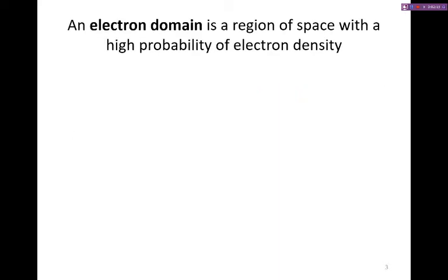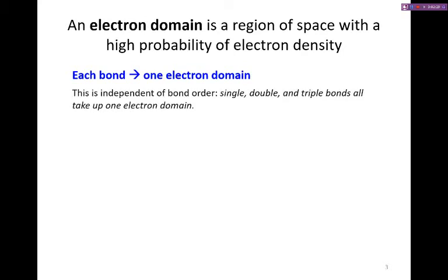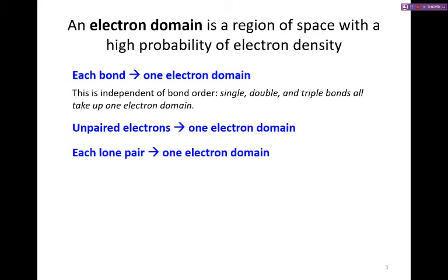An electron domain is a region of space where there's a high probability of electron density. Each bond represents one electron domain, and importantly this is independent of bond order — it doesn't matter if we have a single, double, or triple bond, they all count as a single domain. Lone pairs of electrons, also called non-bonding electrons, also represent an electron domain, as do lone pairs on bonding atoms.